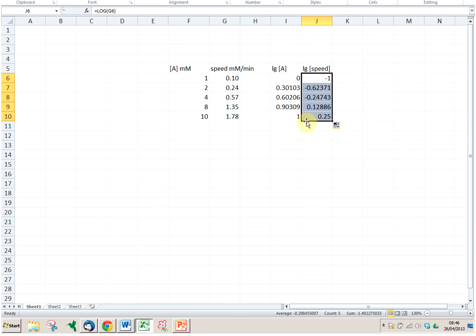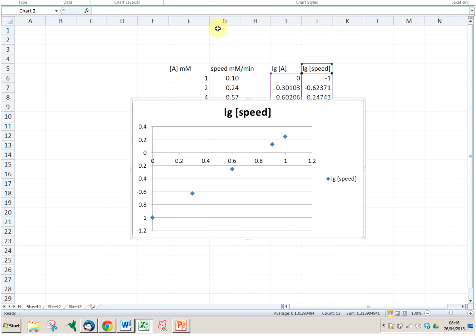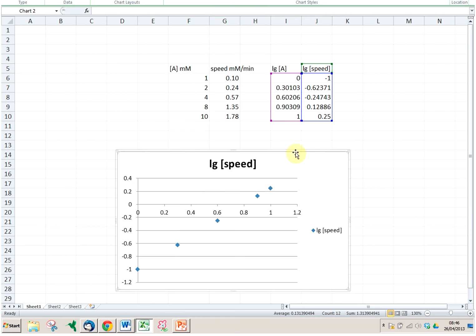We see some of them are negative, but that shouldn't really bother us. And what we can do now is we can draw a nice graph. So we highlight this and then we insert a plot. We do a scatter plot. So that's this one here. And we see we get a straight line.